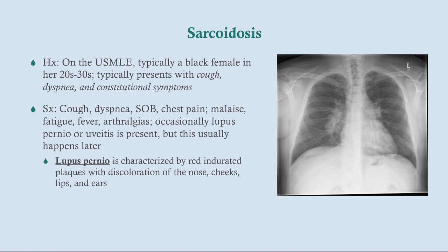Symptoms include cough, dyspnea, shortness of breath, chest pain, malaise, fatigue, fever, and arthralgias — very nonspecific for a chronic inflammatory process. What would give it away is lupus pernio or uveitis, though these tend to appear later in the disease course. Lupus pernio is a rash consisting of red, indurated plaques occurring on the face — the nose, cheeks, lips, and ears.